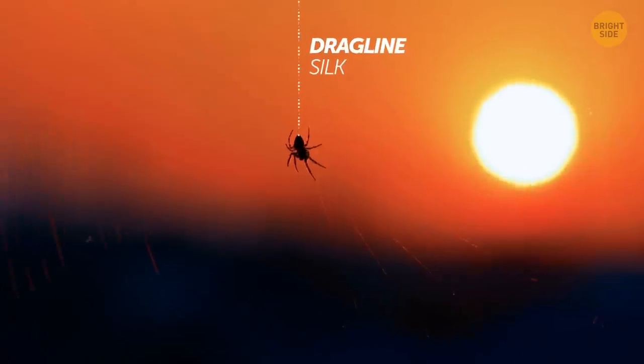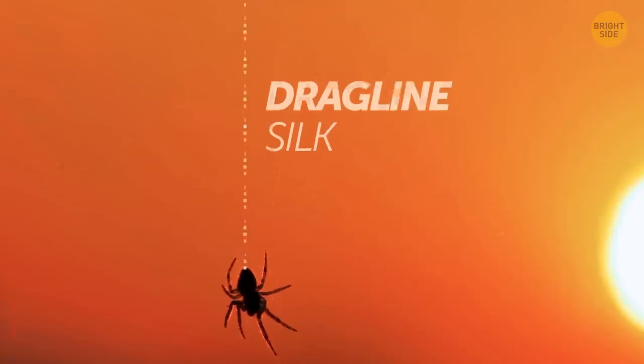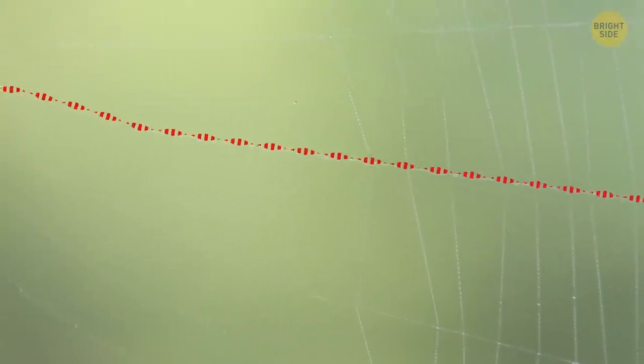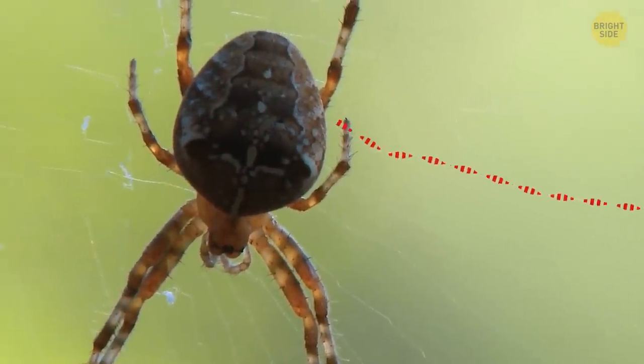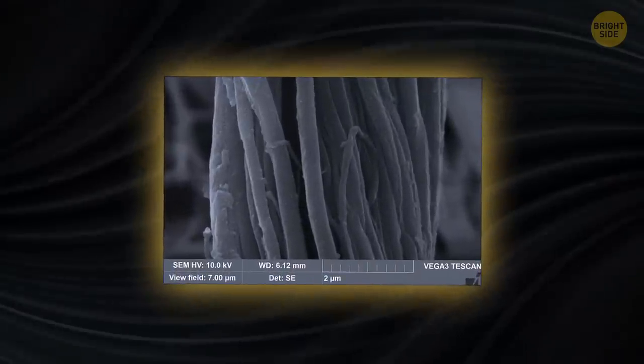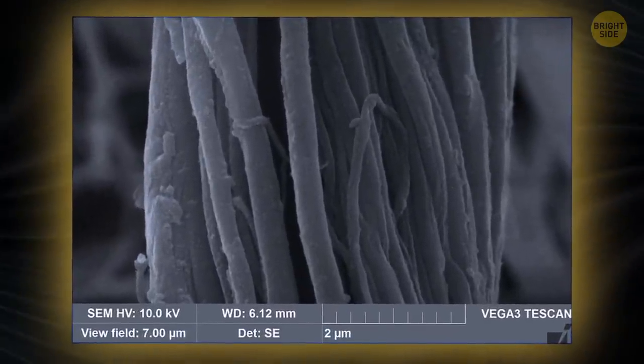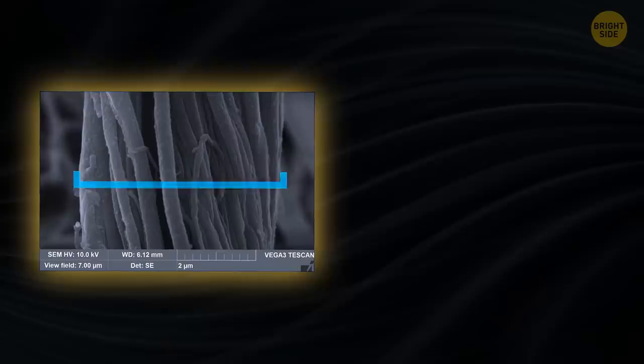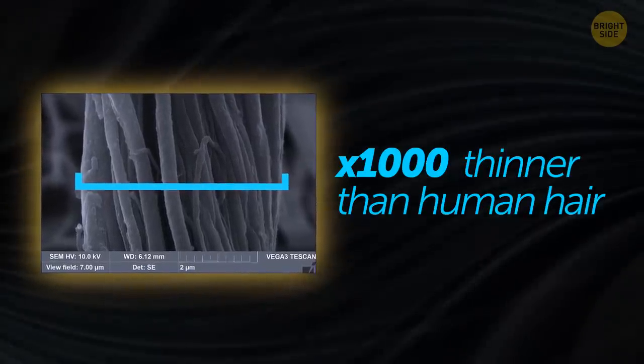Dragline silk is an especially strong kind of spider silk. A dragline connects the spider to its web. It's something like a safety line in case a spider falls, and it needs to be strong enough to support the weight of the spider. A single strand consists of protein molecules, and they're aligned together really tightly. Each strand of spider silk is 1,000 times thinner than human hair.